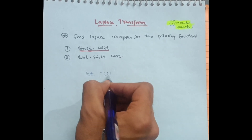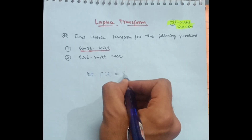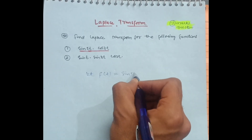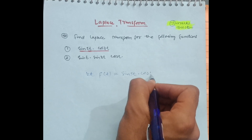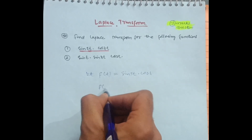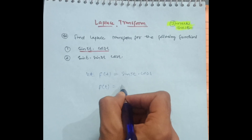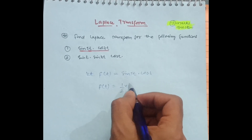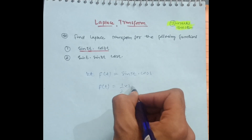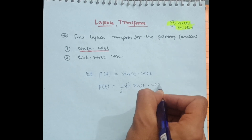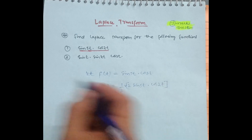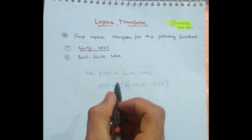First of all, you have to give a name to this particular function. Suppose f(t) is equal to sine of 5t into cos of 2t. I will make one extra step here — I will multiply the numerator and denominator by 2; the 2 will get cancelled, so there is no impact on the function. This will be 2 times sine of 5t into cos of 2t.